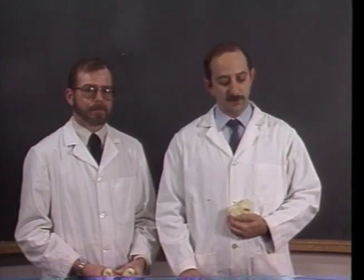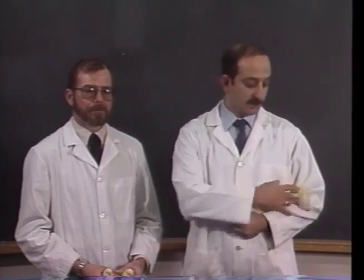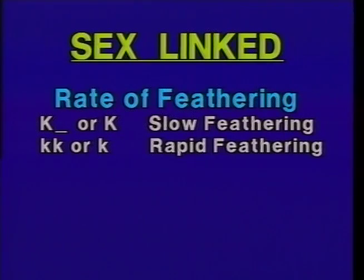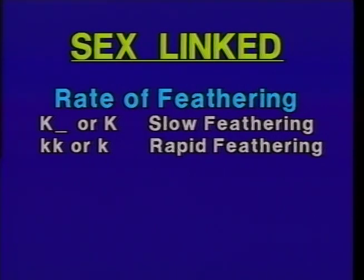Our last example deals with sex-linked traits — rate of feathering and barring. In chickens, the male is the homogametic sex and the female is the heterogametic sex, the opposite of humans. For slow feathering, a male with at least one dominant K allele will be slow feathering regardless of the other allele. The female will show whichever allele she carries — big K for slow feathering, little k for rapid feathering. Little k is recessive, so a male must be homozygous little k little k to be rapid feathering.